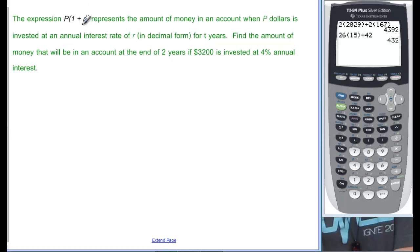Now we've got an interesting looking thing. Expression P times the quantity 1 plus R to the T represents the amount of money in the account when P dollars is invested at an annual interest rate of R, and notice this says in decimal form, for T years. So, find the amount of money that will be in the account at 2 years if 3200 dollars is invested at 4% annual interest. So, we've got a P in our equation, and we've got an R in our expression, and we've got a T. What do we know? 3200 is invested, so that's our P. P is the amount of money. And our rate is going to be 4%.